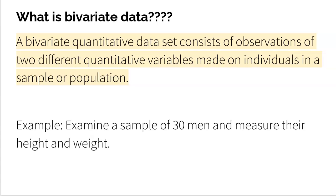Well, bivariate data, a bivariate quantitative data set consists of observations of two different quantitative variables made on individuals in a sample or population.